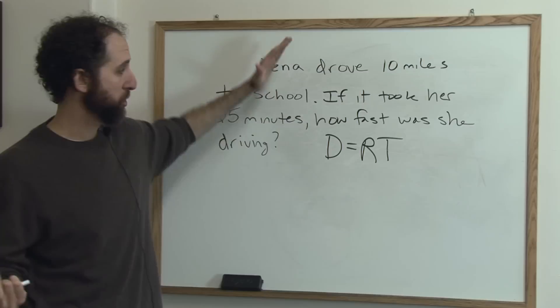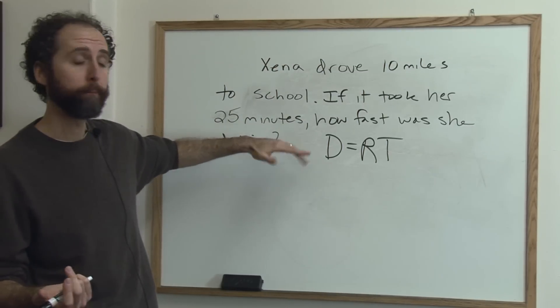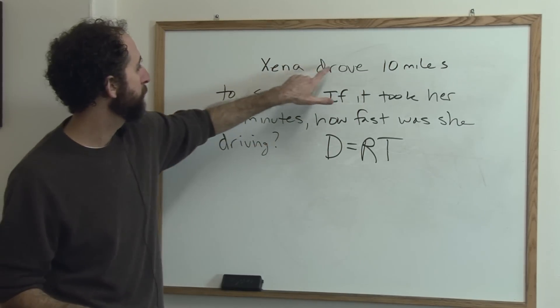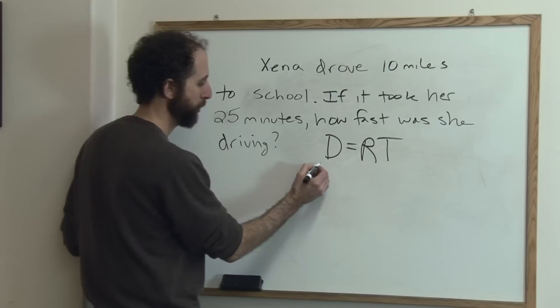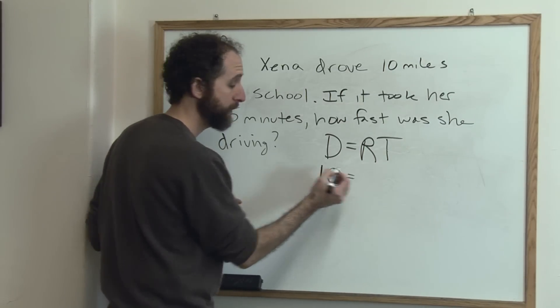So we plug in what we know. Just look through the question and hunt for what you know. So do we know D? Zena drove 10 miles. Bingo. So she drove 10 miles. That's the distance.